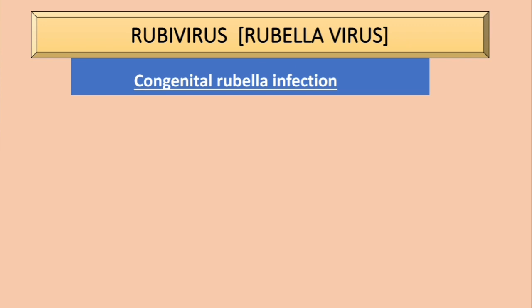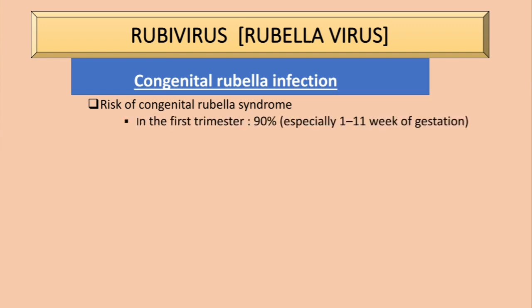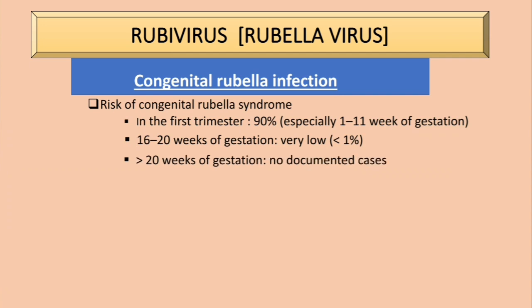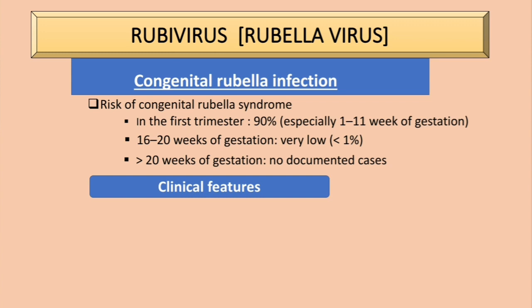Now let's discuss congenital rubella infection. Regarding risk: in the first trimester the risk is about 90%, especially between the 1st and 11th week of gestation, because this is when organogenesis takes place. Between 16 to 20 weeks of gestation the risk is low, usually less than 1%. After 20 weeks of gestation it is considered safe, as there are no documented cases.